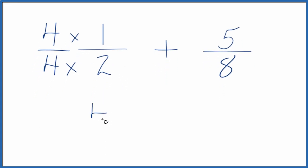Four times one, that's four. Four times two is eight. Over here, five-eighths, we already have eight in our denominator. So let's just call it five-eighths.